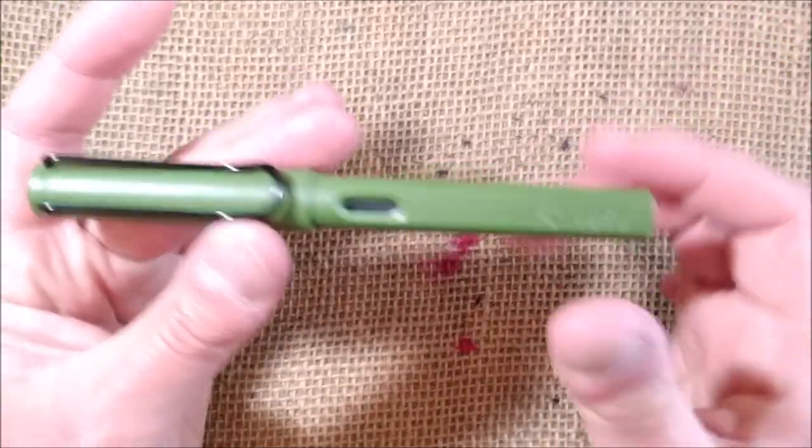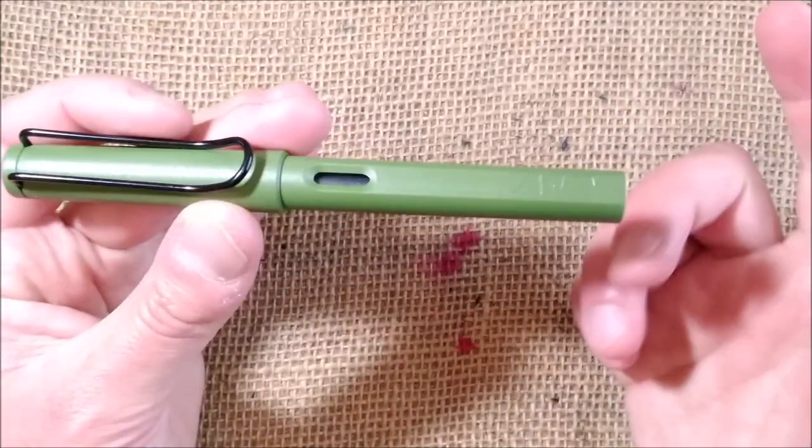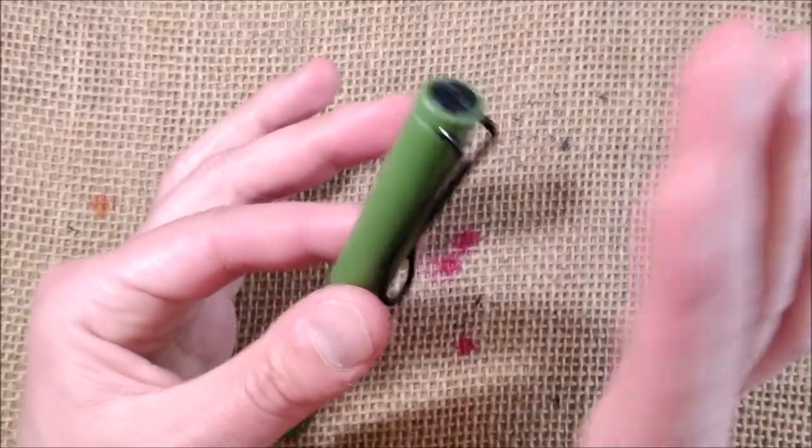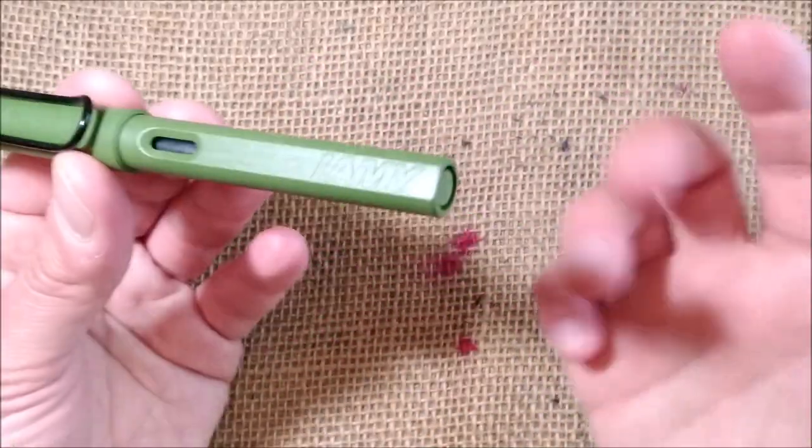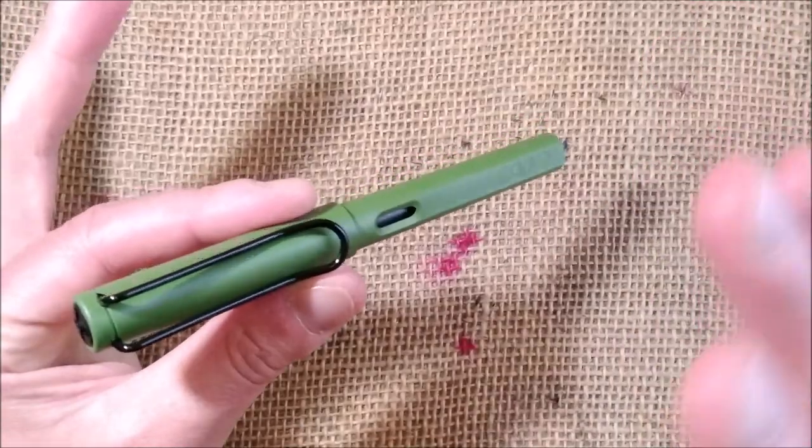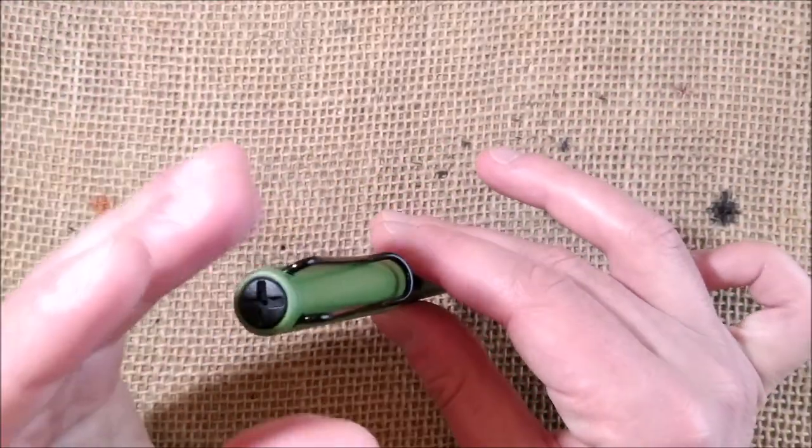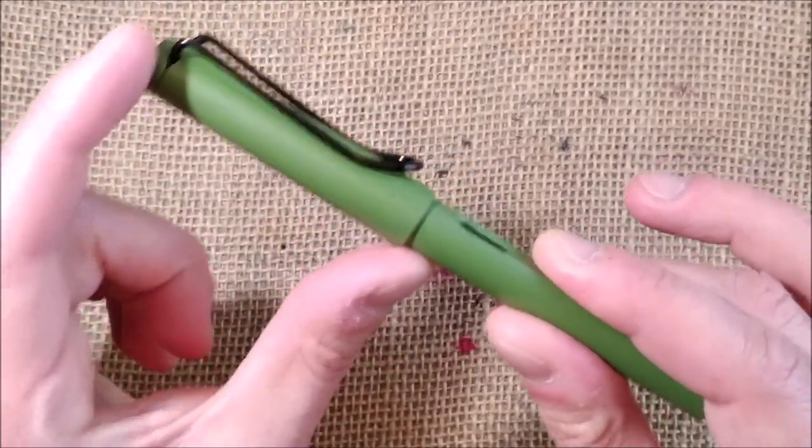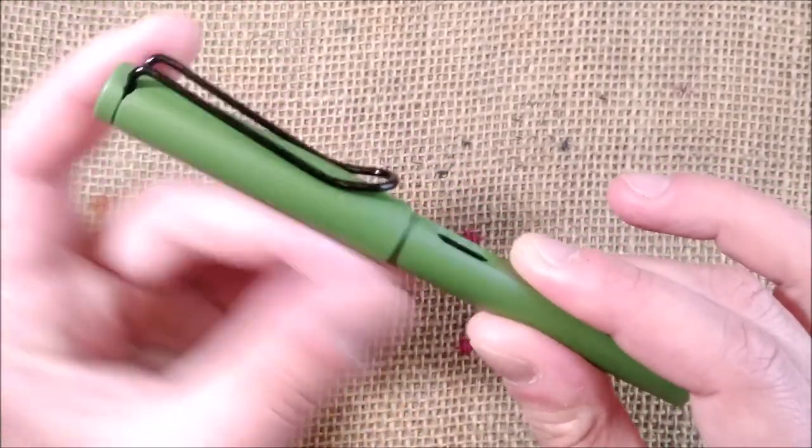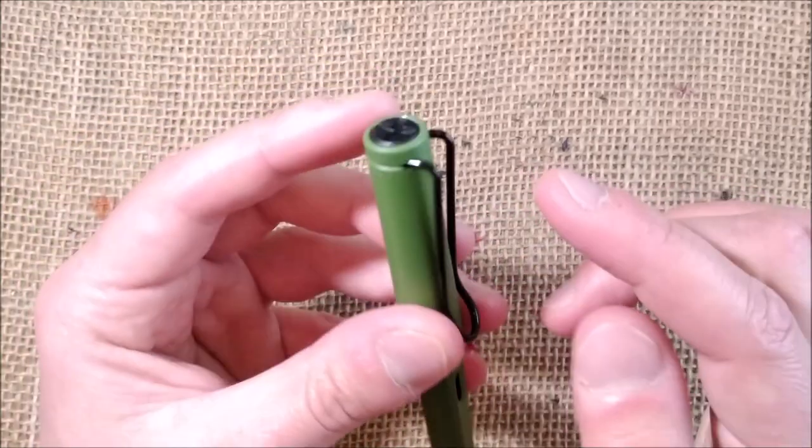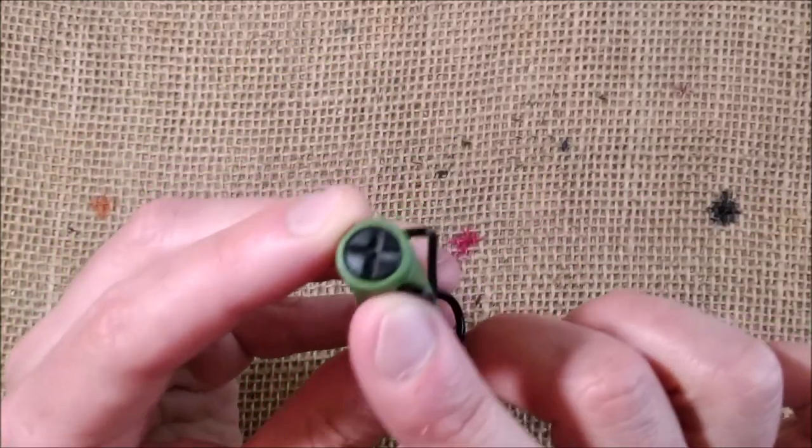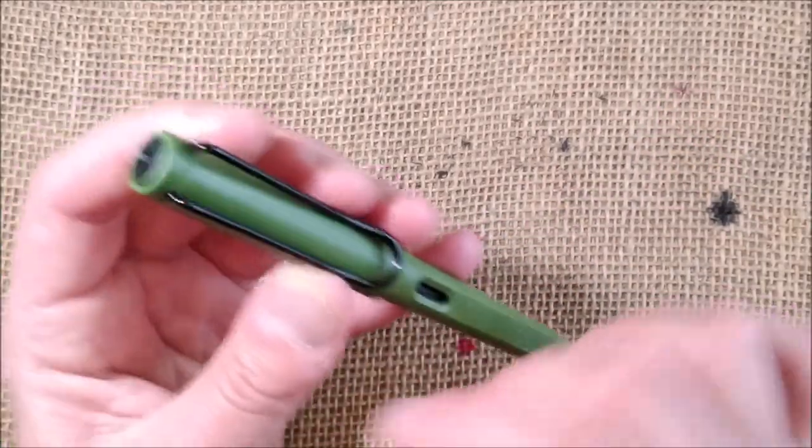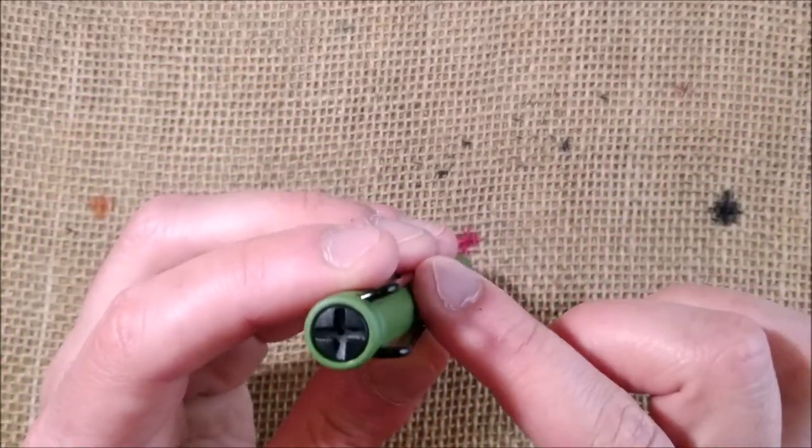This is a typical Lamy Safari pen. I guess you all know this pen. Just a very quick overview of the shape. We have a cylindrical cap, very simple with a top made of black plastic. All the pen is plastic except for the clip and the nib.